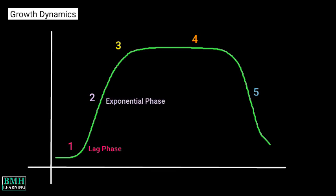The second is the exponential phase. During this phase, cell density increases as a function of time. The third is the phase of declining growth rate. In this phase, cell division slows because nutrients, light, pH, carbon dioxide, and other physical and chemical factors begin to limit growth.